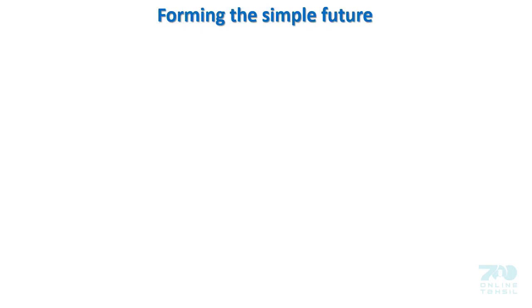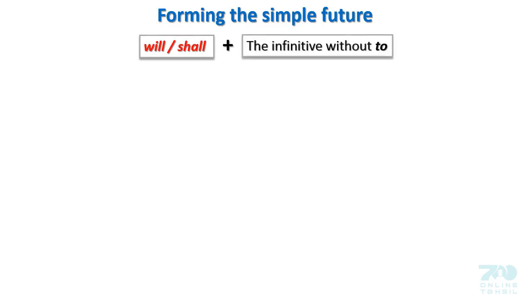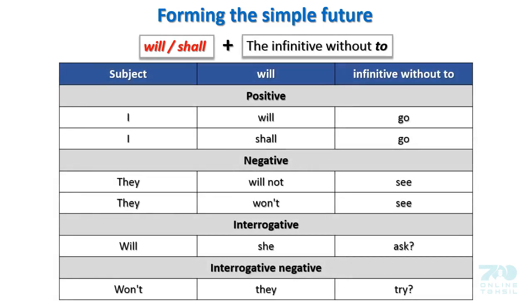Forming the simple future. The simple future tense is composed of two parts: will or shall, plus the infinitive without 'to.' Positive: 'I will go.' 'I shall go.' Negative: 'They will not see.' 'They won't see.' Interrogative: 'Will she ask?' Interrogative negative: 'Won't they try?'